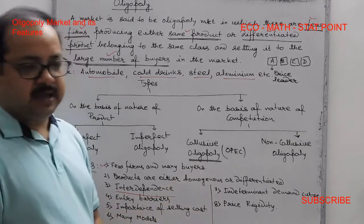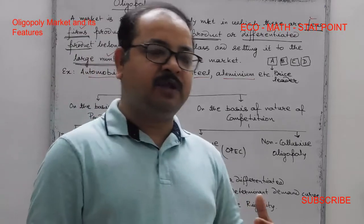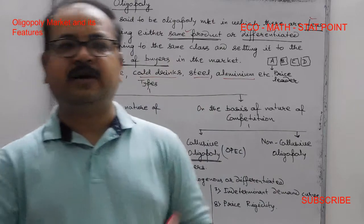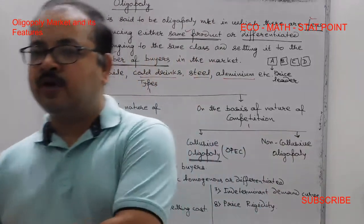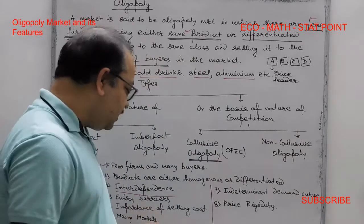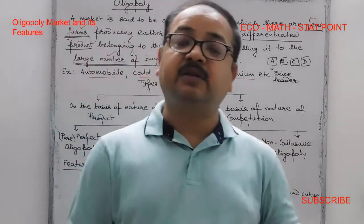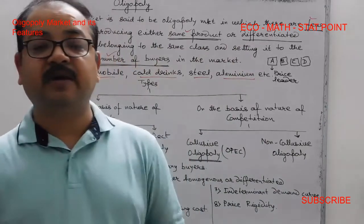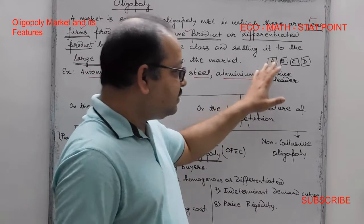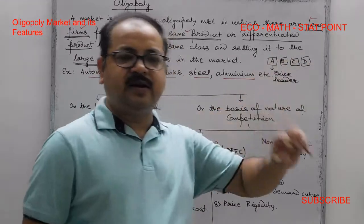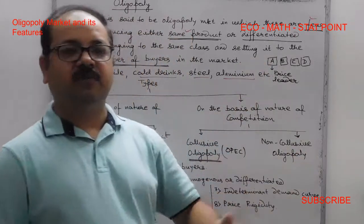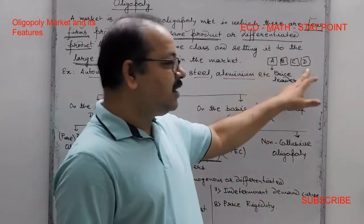The sixth feature is that there is no unique equilibrium in the oligopoly market. Unlike perfectly competitive, monopoly, or monopolistic competitive markets where we have defined short-run and long-run equilibria, in oligopoly there is strong interdependence, and any firm that changes its price-quantity combination affects all others.